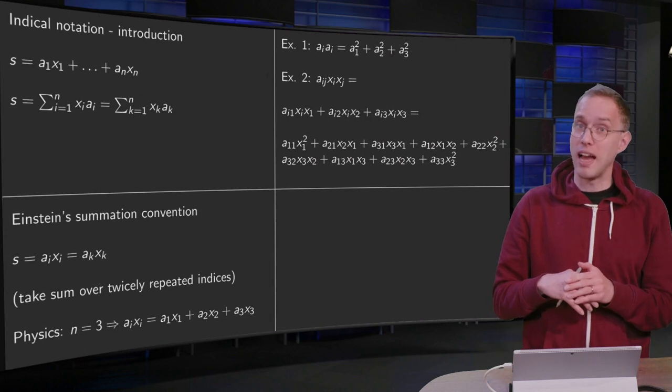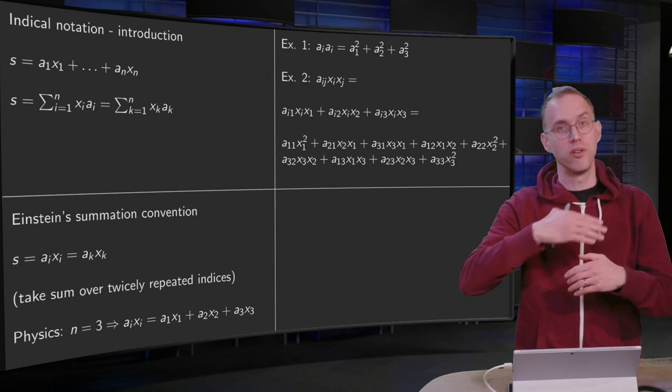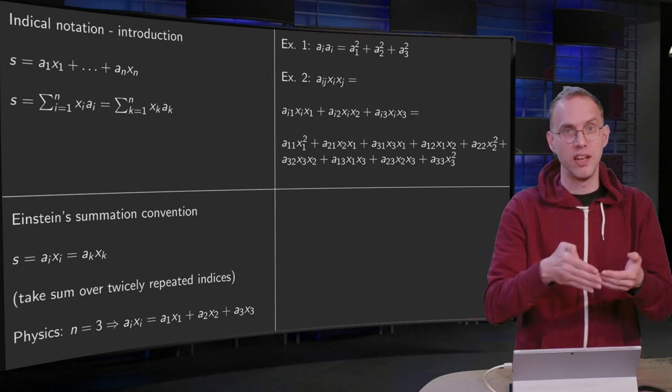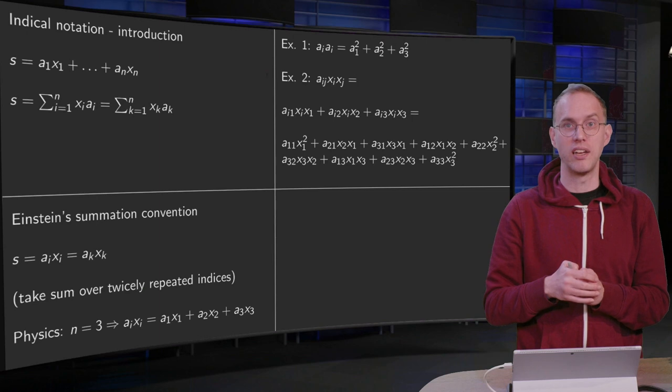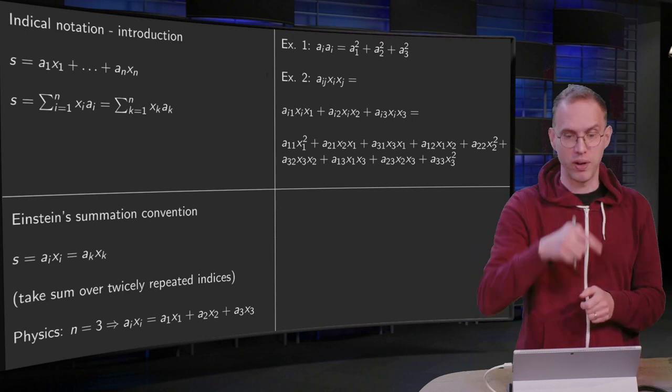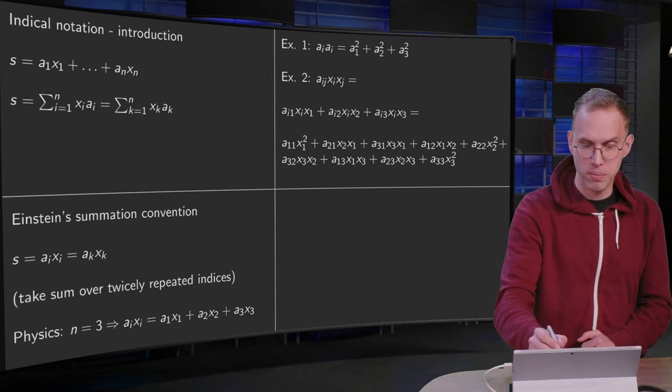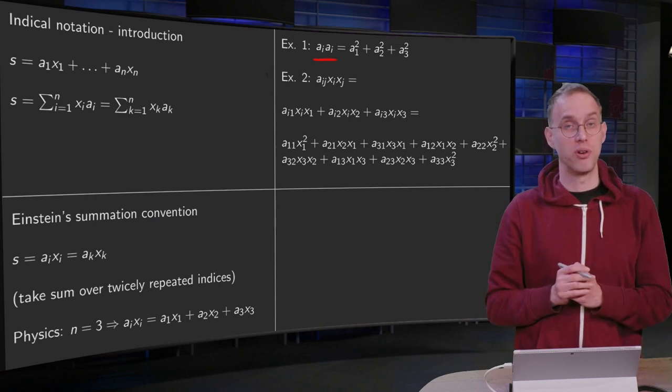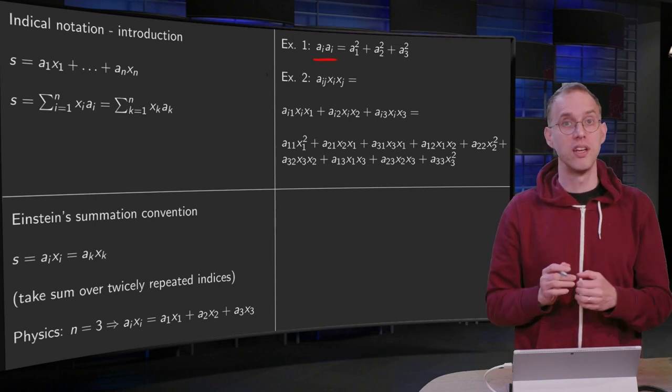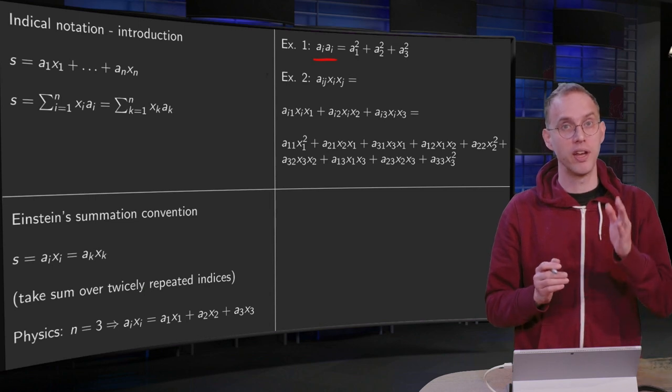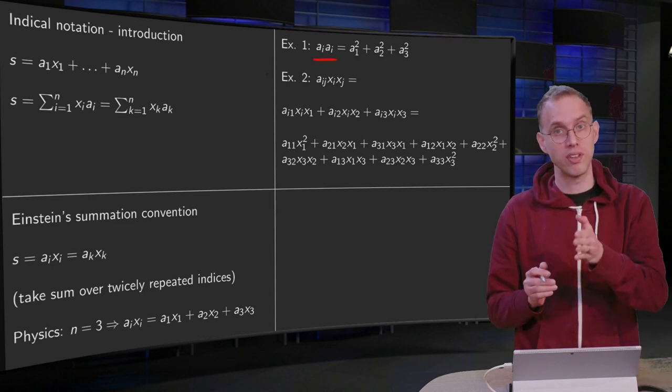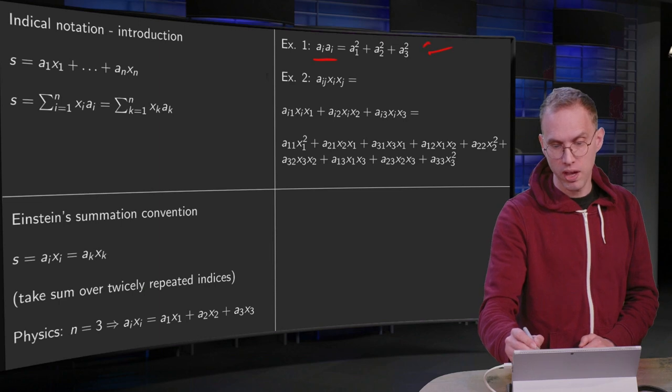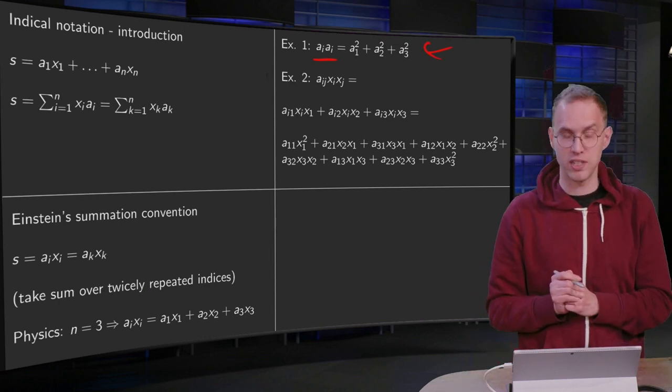Now let us do a few examples. First go to start with the index notation and write out what it means and then we will go the other way around. In example 1, for example if we have aᵢaᵢ, we have an index i occurring twice, so we have to sum over it. So aᵢaᵢ equals a₁a₁ plus a₂a₂ plus a₃a₃ or a₁ squared plus a₂ squared plus a₃ squared.